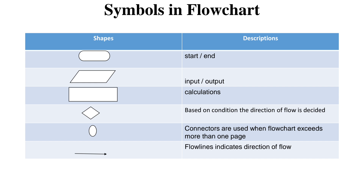The next is the connector symbol, represented by a small circle. When we have a flowchart which exceeds more than one page, it can be connected with the help of connectors. It is a proper representation for specifying the continuity of the flowchart. The next is flowlines. A flowline is indicated by a line with a pointed arrow mark. It is unidirectional because the flowlines specify from where to where the control flow moves in the flowchart.